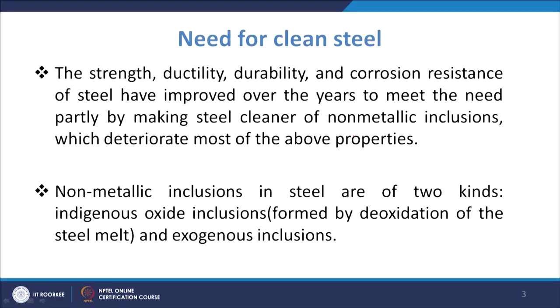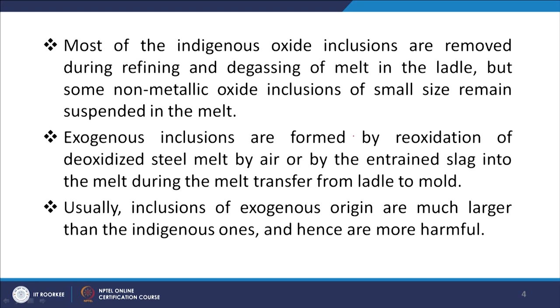Non-metallic inclusions in steel are of two types. The first is indigenous oxide inclusions, normally formed by the deoxidation of the steel melt. These are removed during refining and degassing of the melt in the ladle, but some small-sized non-metallic oxide inclusions still remain suspended in the melt and will come to the Tundish.